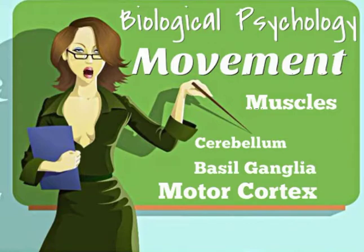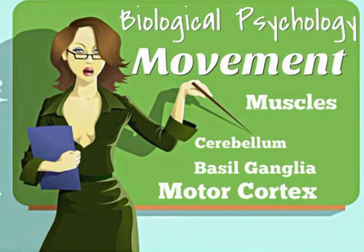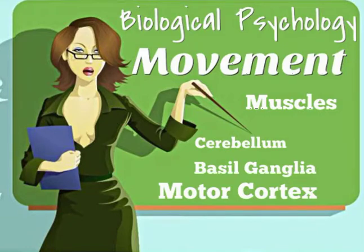Parts of the brain that are involved in movement — from chapter 2, you should already know these: the cerebellum, the primary motor cortex, and the basal ganglia. These are parts of the cerebral cortex involved in movement, not necessarily the actual contraction of muscles, but indirectly — and we'll talk about those.